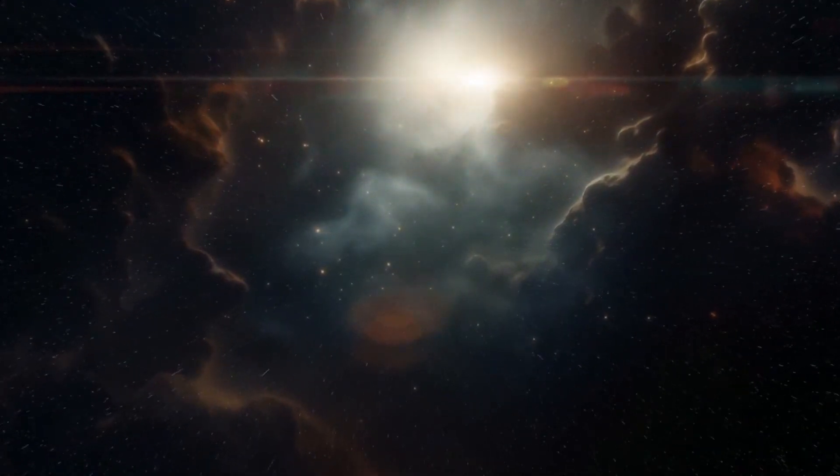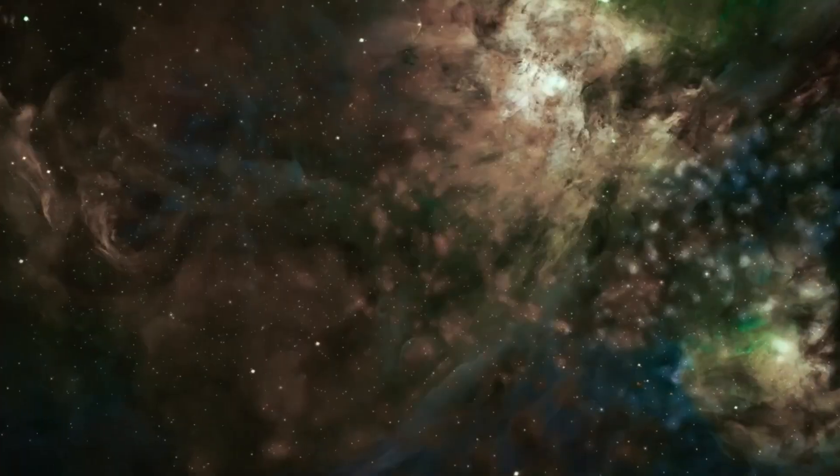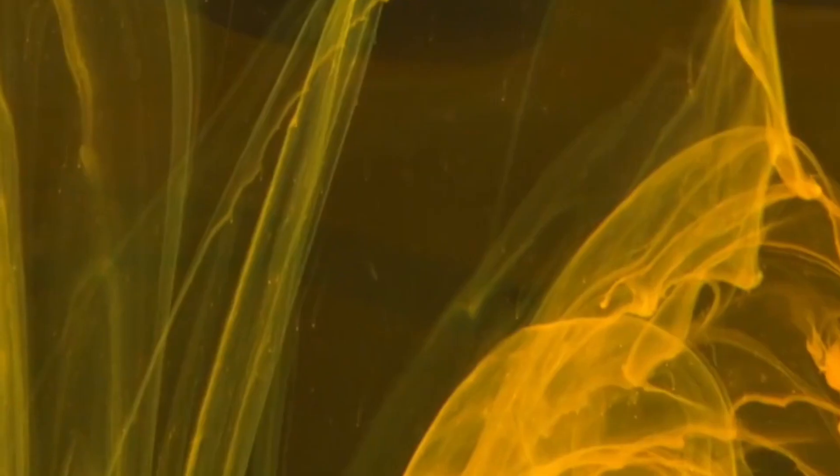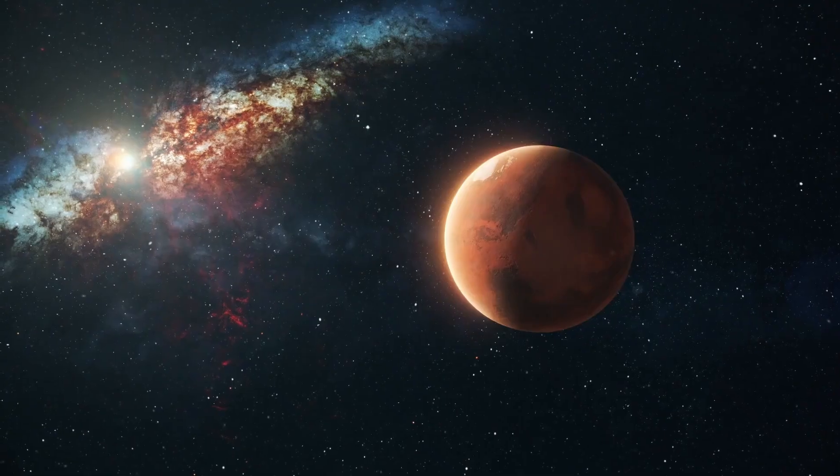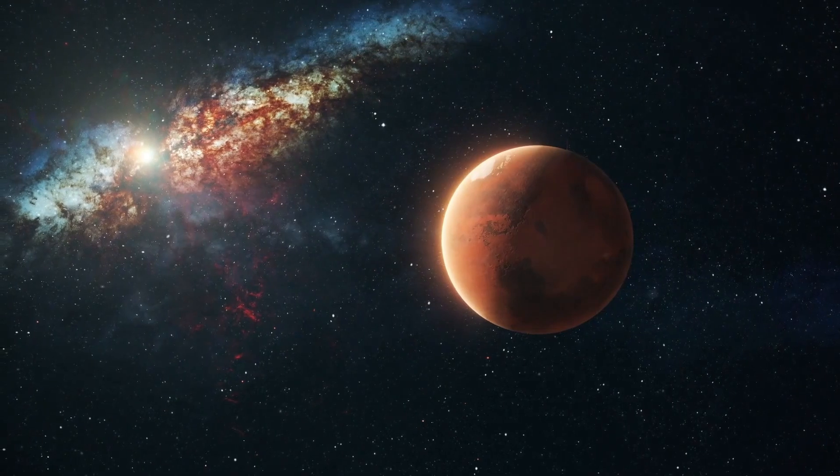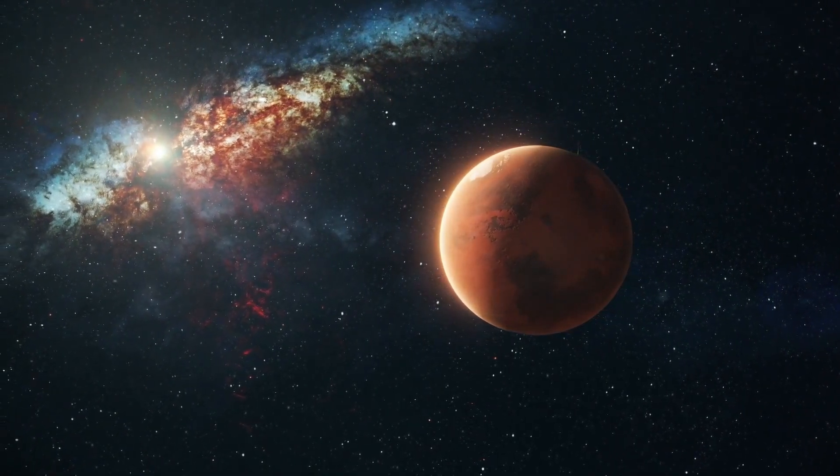Proxima Centauri b isn't alone. It has a companion, Proxima Centauri c, which is significantly farther from the star. This planet has an orbital period of about five Earth years and was discovered in 2020 using pre-recovery Hubble data. What's even more intriguing about Proxima c is that it appears to be an incredibly bright world, possibly due to the presence of a ring system.